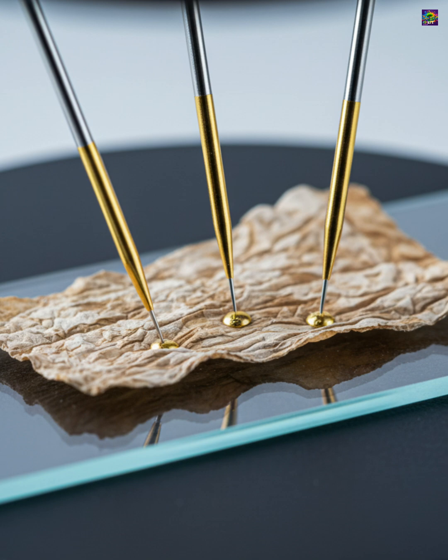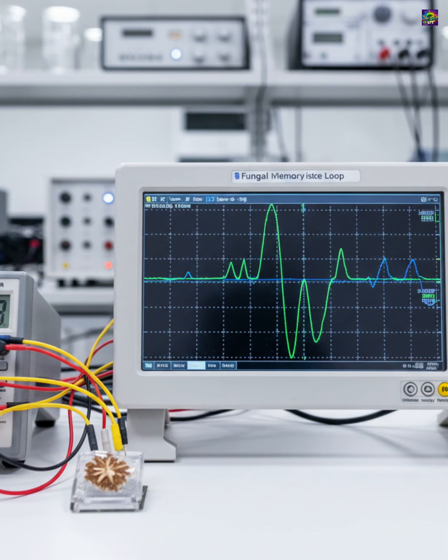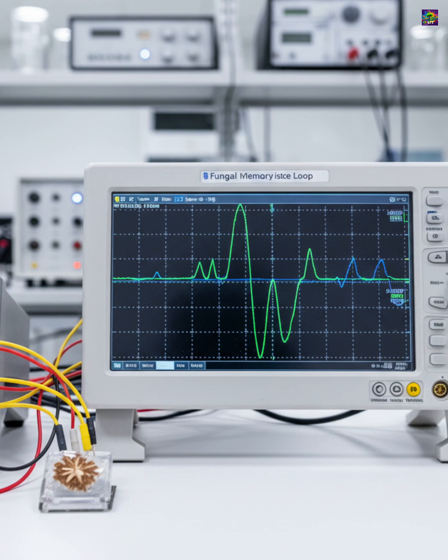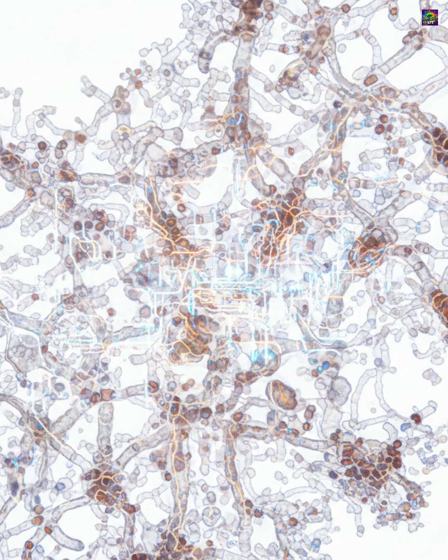Engineers at Ohio State University showed that fungal networks can act as memristors, devices whose resistance changes based on previous electrical signals, allowing them to store information much like elements used in neuromorphic computing.